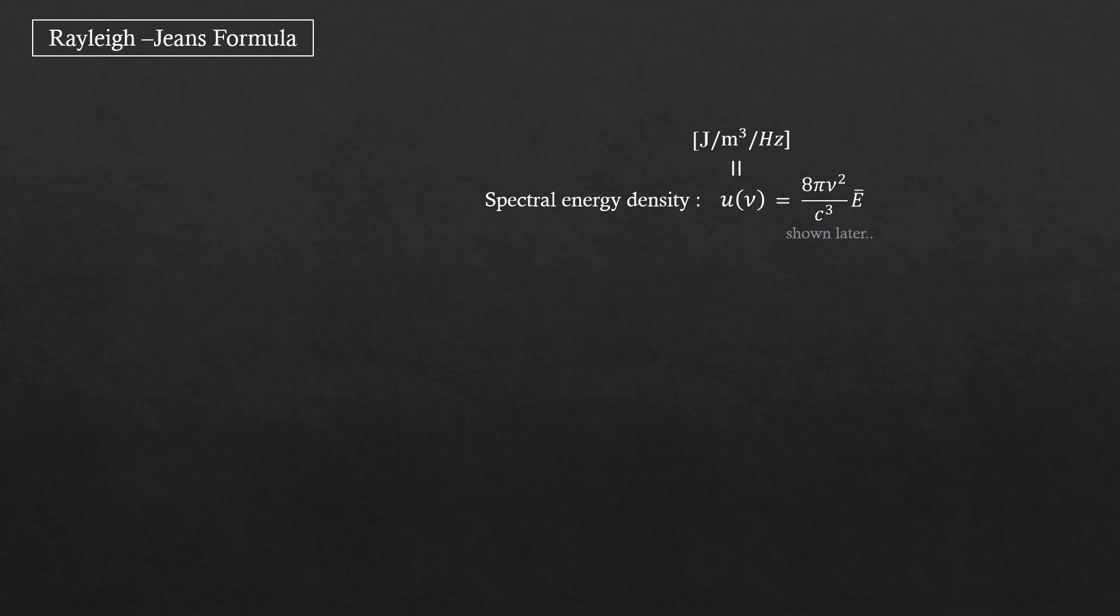According to the Boltzmann distribution, assuming that the energy is a continuous variable, meaning we can use integral for integrating it, e equals to kT, right? So the energy density is this. Simple.